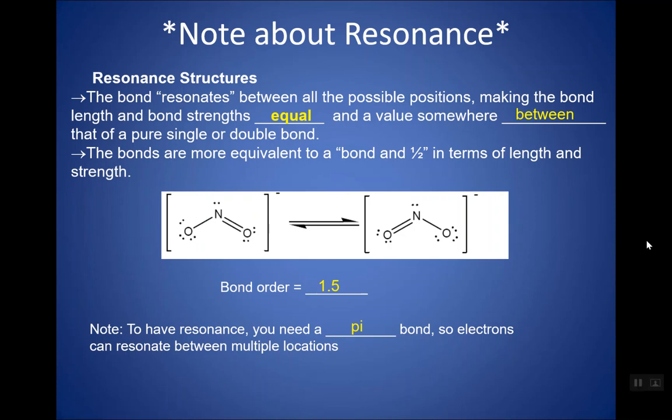So to summarize: sigma bonds have electrons directly between the nuclei, pi bonds have electrons above and below. For bond strength: first consider atomic radius — bigger radius means longer bond length and therefore a weaker bond. If comparing single, double, and triple bonds between the same elements, triple bonds are shorter and stronger than single bonds. The AP exam loves to ask questions about this, and we'll continue to practice it in class.